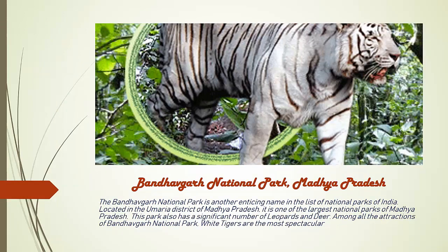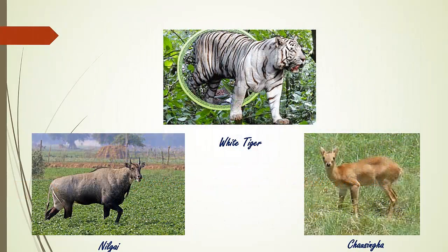Bandhavgarh National Park is another exciting name in the list of national parks of India, located in Umaria district of Madhya Pradesh. It is one of the largest national parks of Madhya Pradesh. White tigers are the most spectacular attraction at Bandhavgarh National Park. Animal examples include Nilgai, White Tiger, and Chausingha.